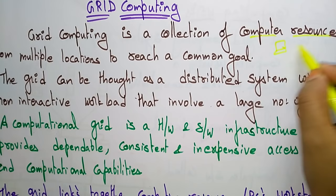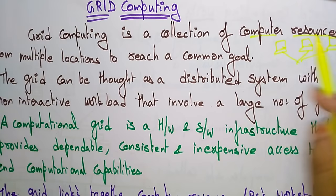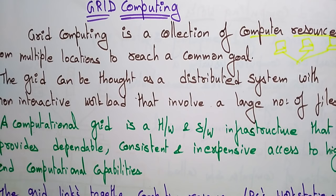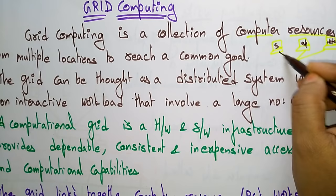Different computers each have their own resources like processors, storage, data, and applications. Grid computing collects those resources from multiple systems and multiple locations to reach a common goal.